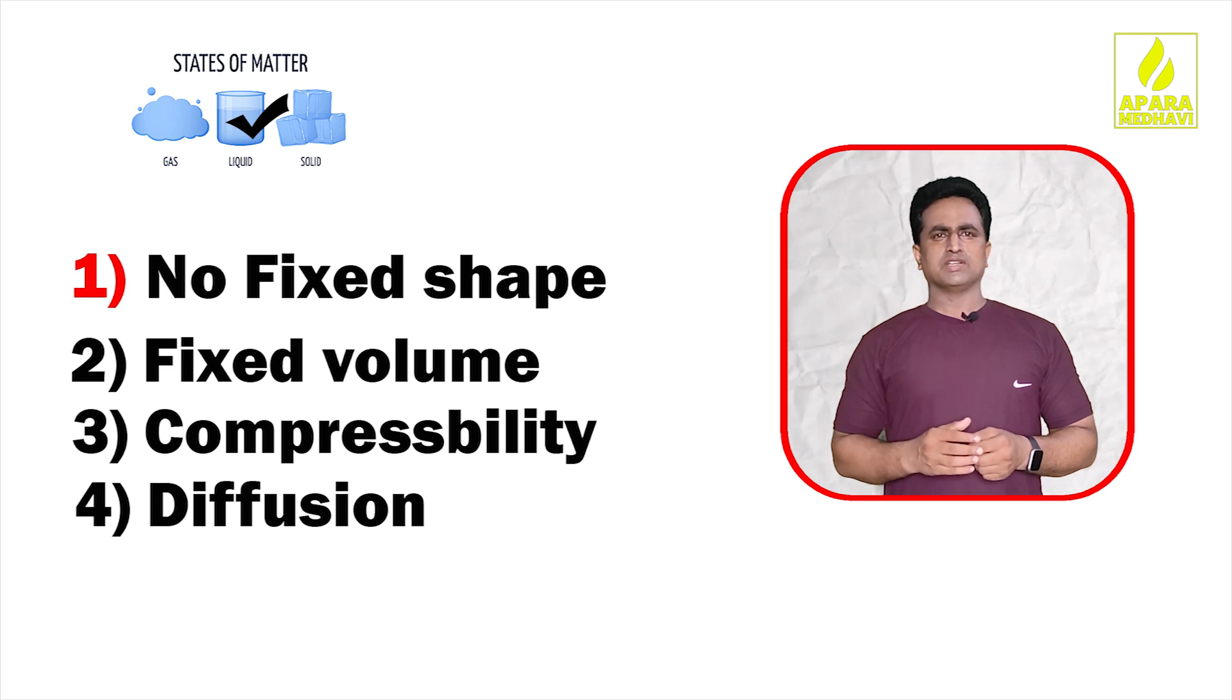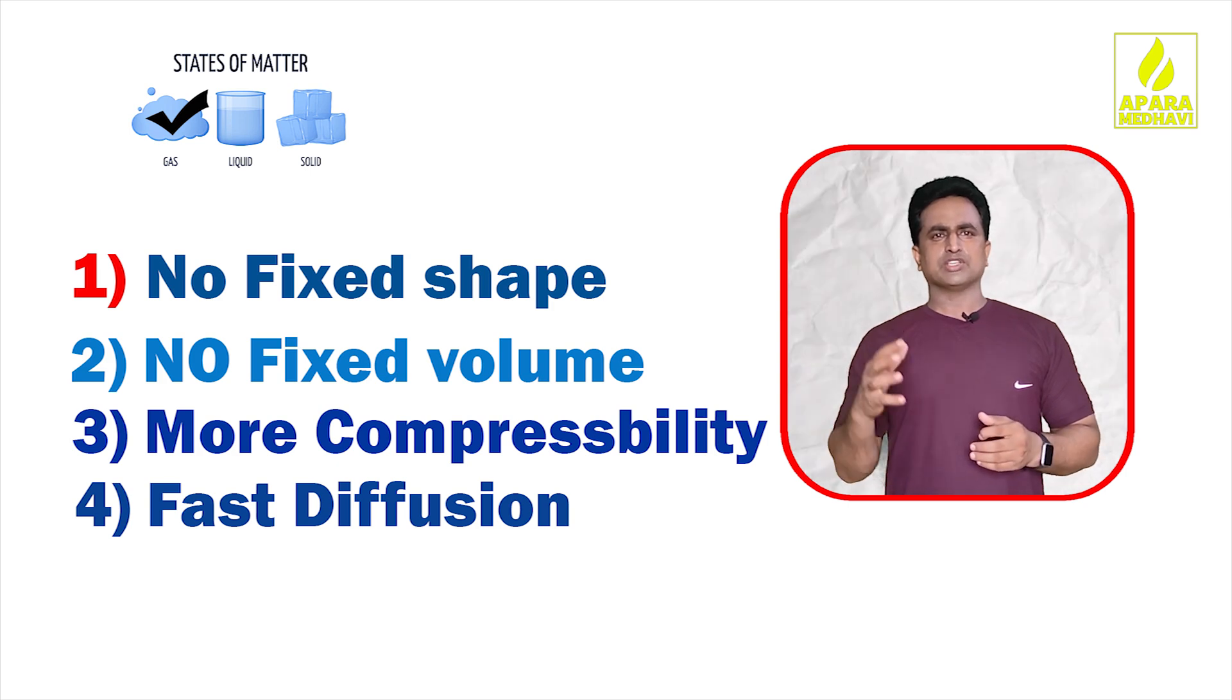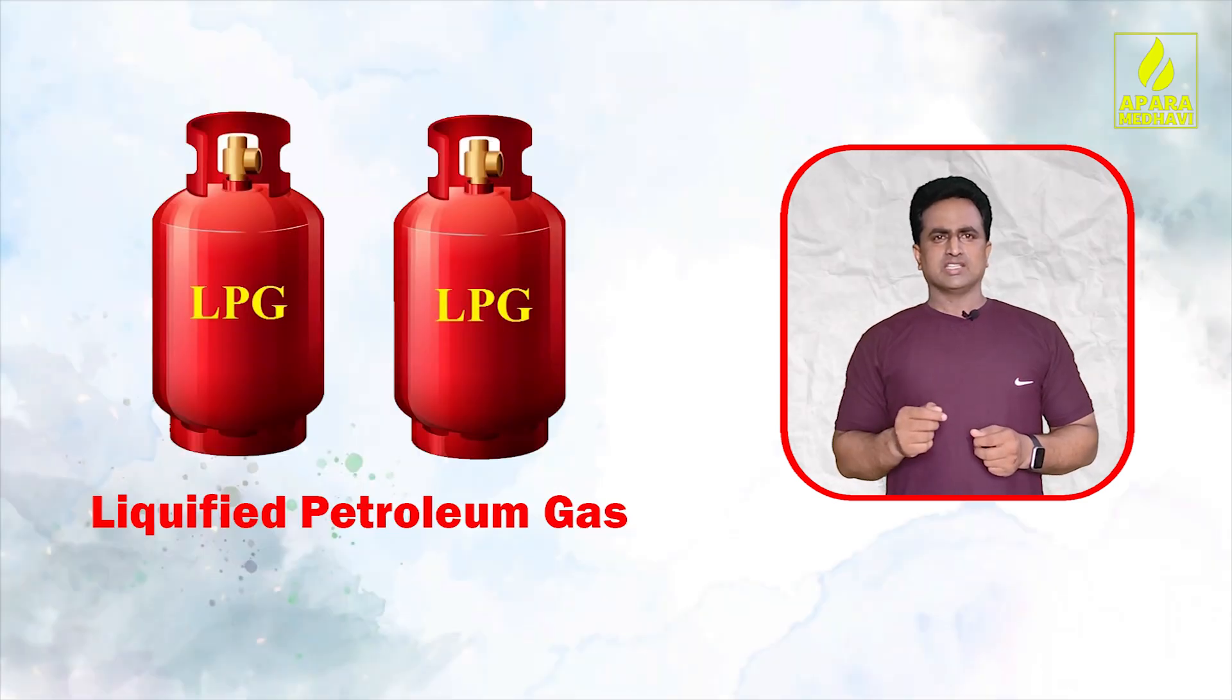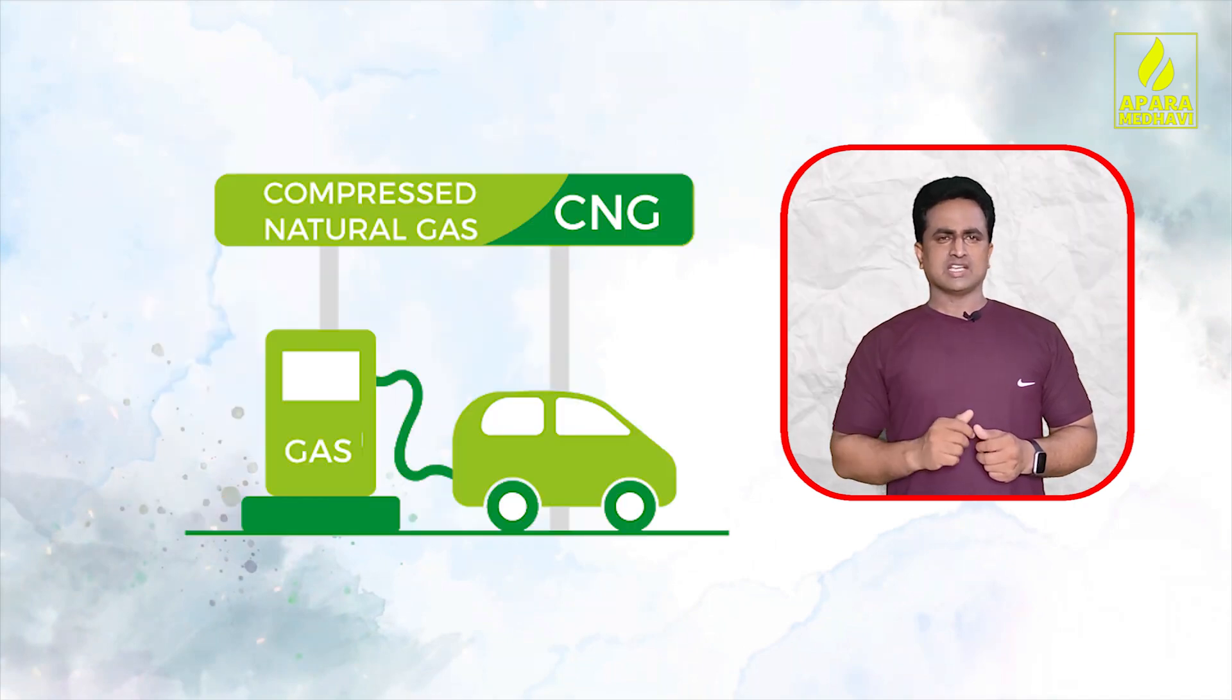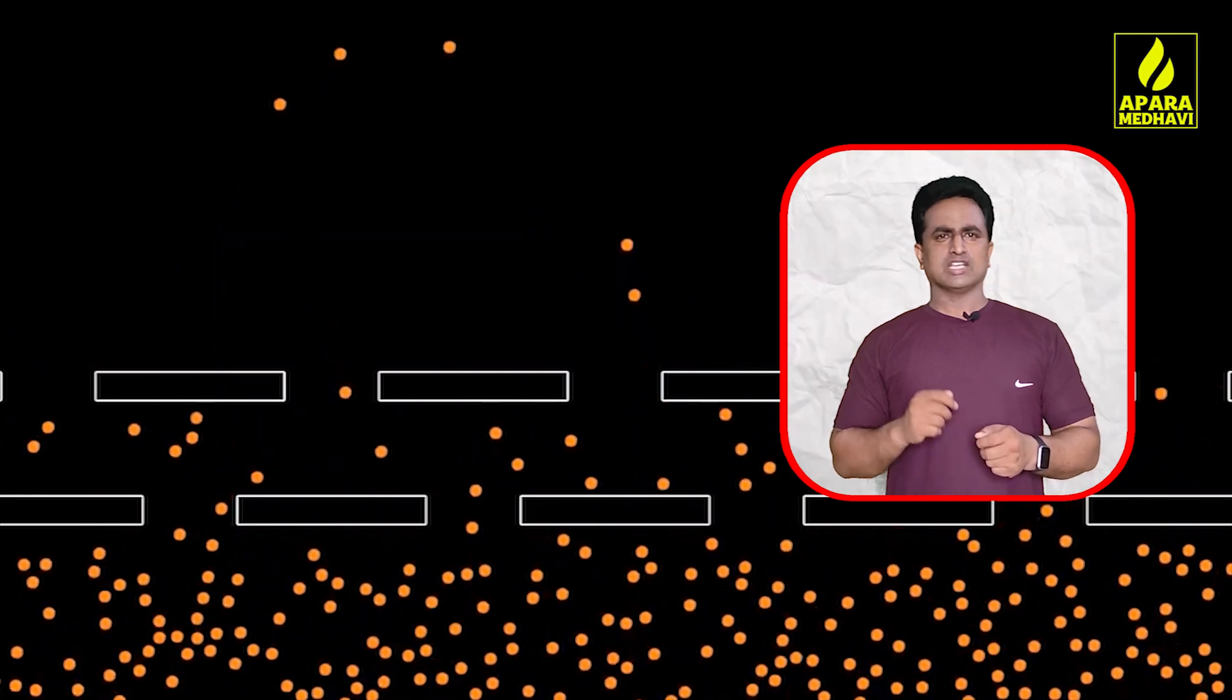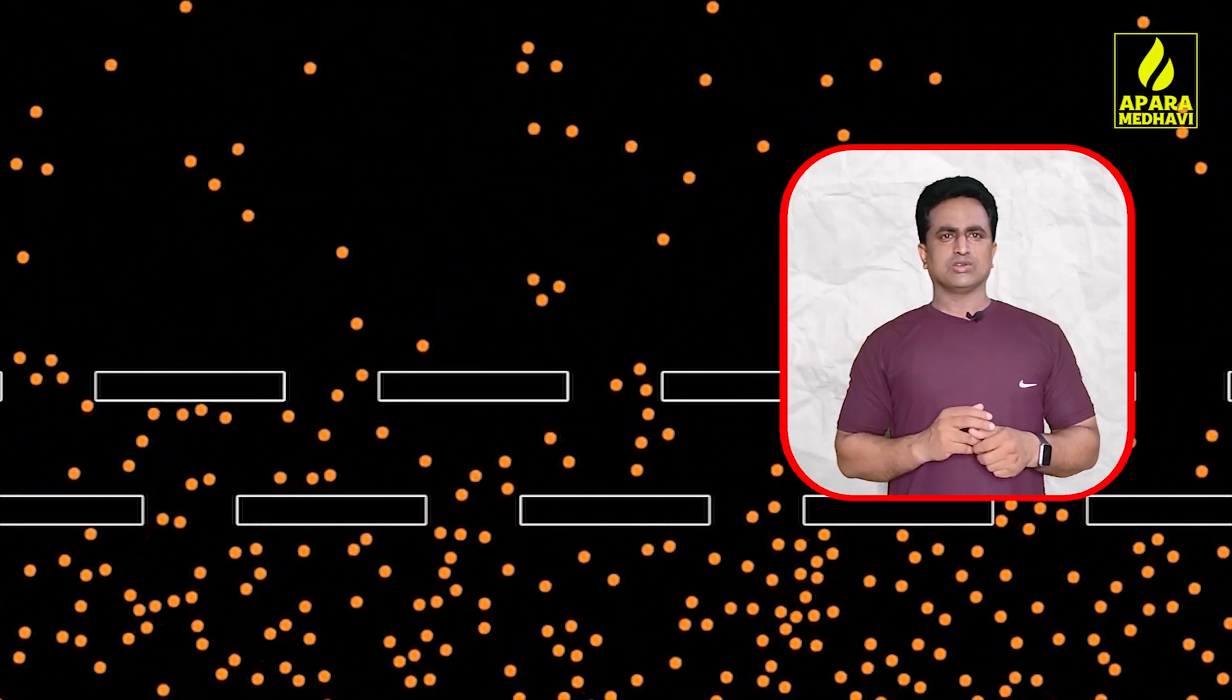In the gas state, there is no fixed shape and no fixed volume. Gases have high compressibility - we can easily compress gases. Diffusion is also very fast in gases. For example, cooking gas is actually in liquid form after compression, which we call LPG (Liquefied Petroleum Gas). We also use CNG (Compressed Natural Gas). Diffusion is very fast in gases compared to solids and liquids.